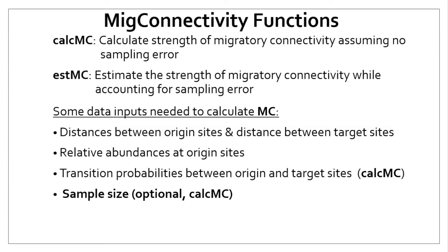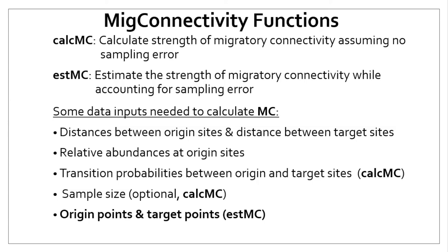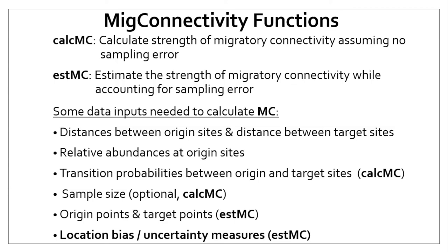When using the STMC function, you need to specify origin points — typically the capture location of individuals — and target points, the location where they ended up in the subsequent season. Finally, you need to specify location bias and location uncertainty associated with the location data. See the package vignette for an example of how to calculate those values from light-level geolocators.